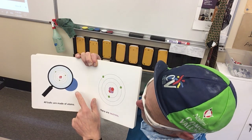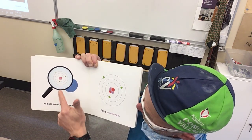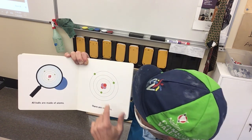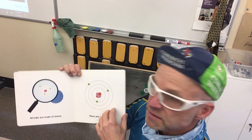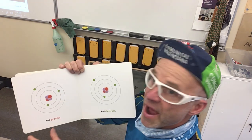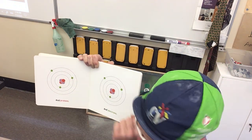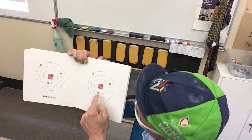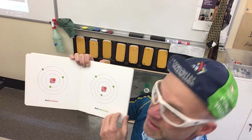All of these balls are made of atoms. There are neutrons — they're in purple here. And protons — these are in red. And electrons — these are the green ones outside the nucleus.